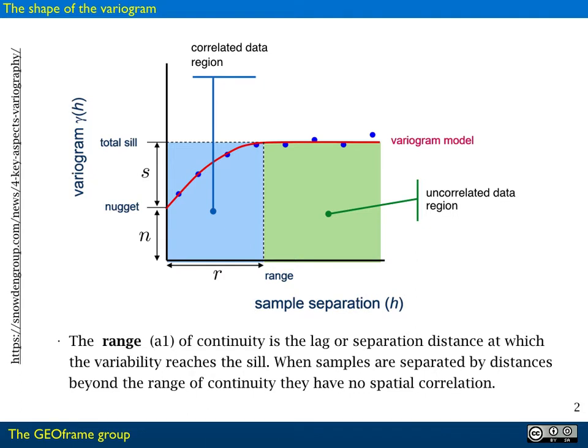The range is important because data inside the range, inside a certain distance, are correlated. So are the measurements at points separated by distances below the range, while instead the points outside with a distance larger than the range are usually uncorrelated. They behave like white noise.